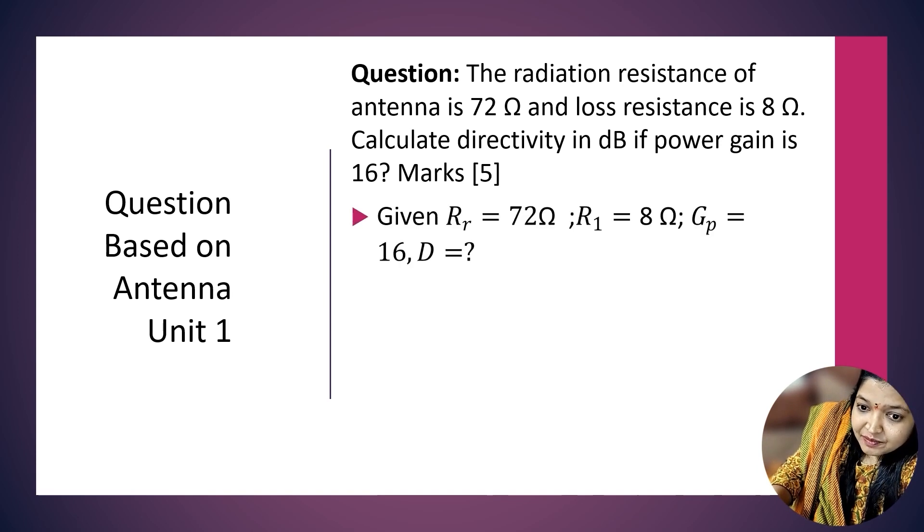This question is for 5 marks. First, we write down the given data: RL = 8Ω, RR = 72Ω, GP = 16. We want to find directivity D.